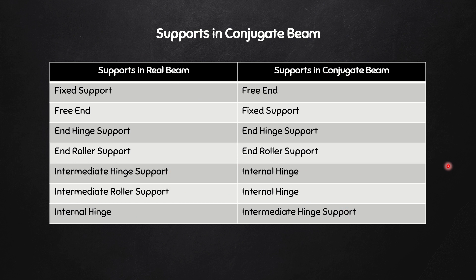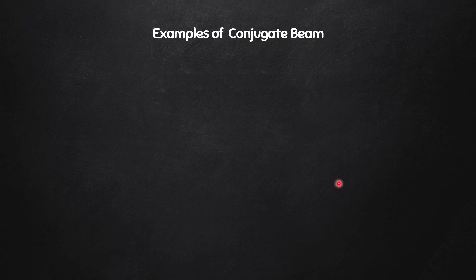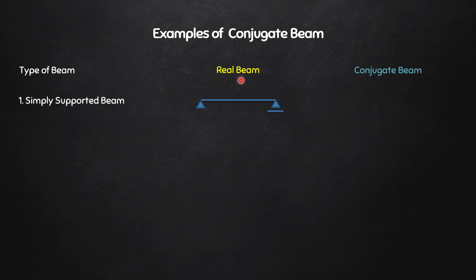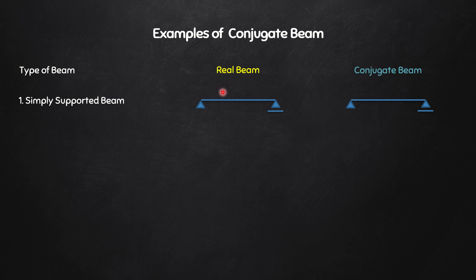Let's see the conversion of real beams into conjugate beams. For a simply supported beam — one end hinge support and one end roller support — the end hinge remains as end hinge and the end roller remains as end roller. So the conjugate beam for a real simply supported beam is also a simply supported beam. Both look the same.